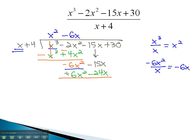As we combine, we remember to change the signs, making both negatives into a positive. We now have 9x, and we can bring down the 30.